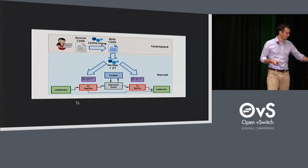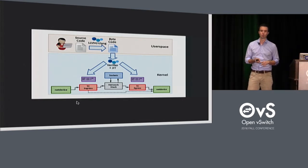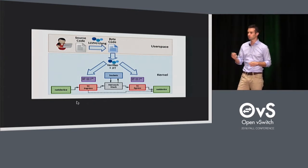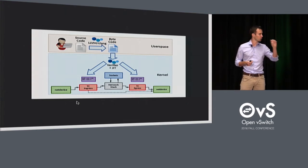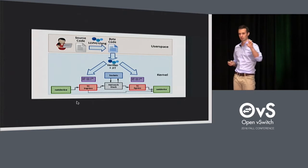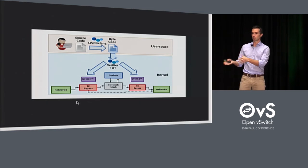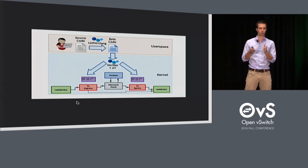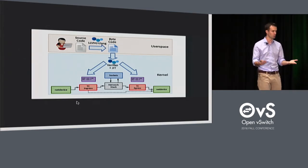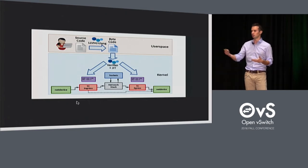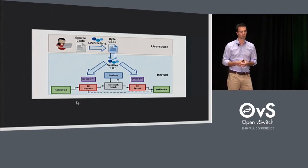Once we have the bytecode, we need to load it into the Linux kernel. There is a system call which allows loading a program — the syscall will take the bytecode and load it into the kernel. The kernel will then verify whether the bytecode is safe to run. If you load a Linux kernel module with a bug, it will crash your kernel. A kernel module could also expose kernel memory, which could be exploited, and you could create a deadlock on the CPU by looping inside a kernel module.